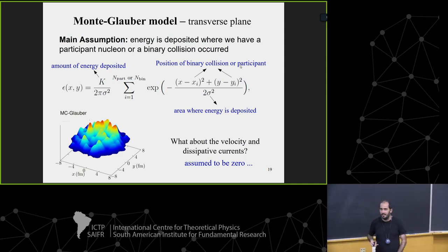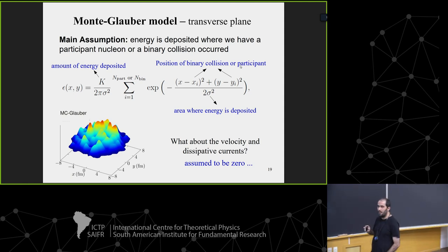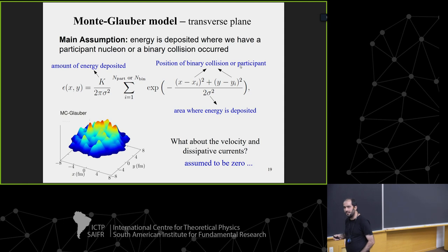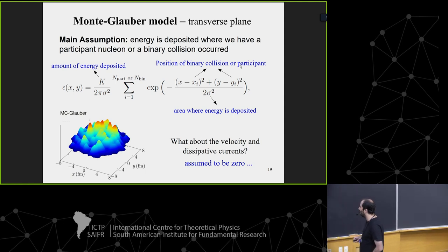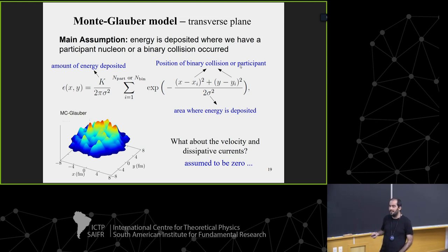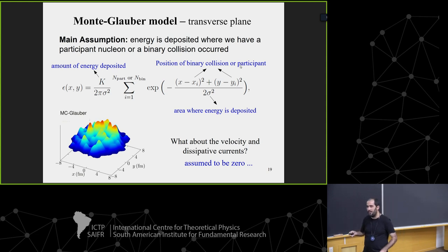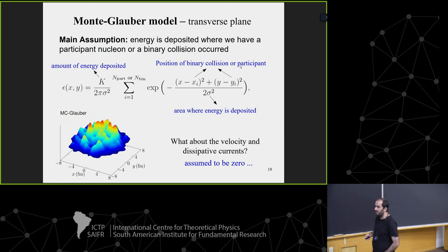What about the dissipative currents — bulk viscous pressure and shear stress tensor π^μν? Usually in this description you know nothing about them. Quite often you just set them to zero and ignore their existence, or find some other way to describe them. Finding the initial energy deposition is manageable with general arguments, but finding the initial velocities and dissipative currents is harder.